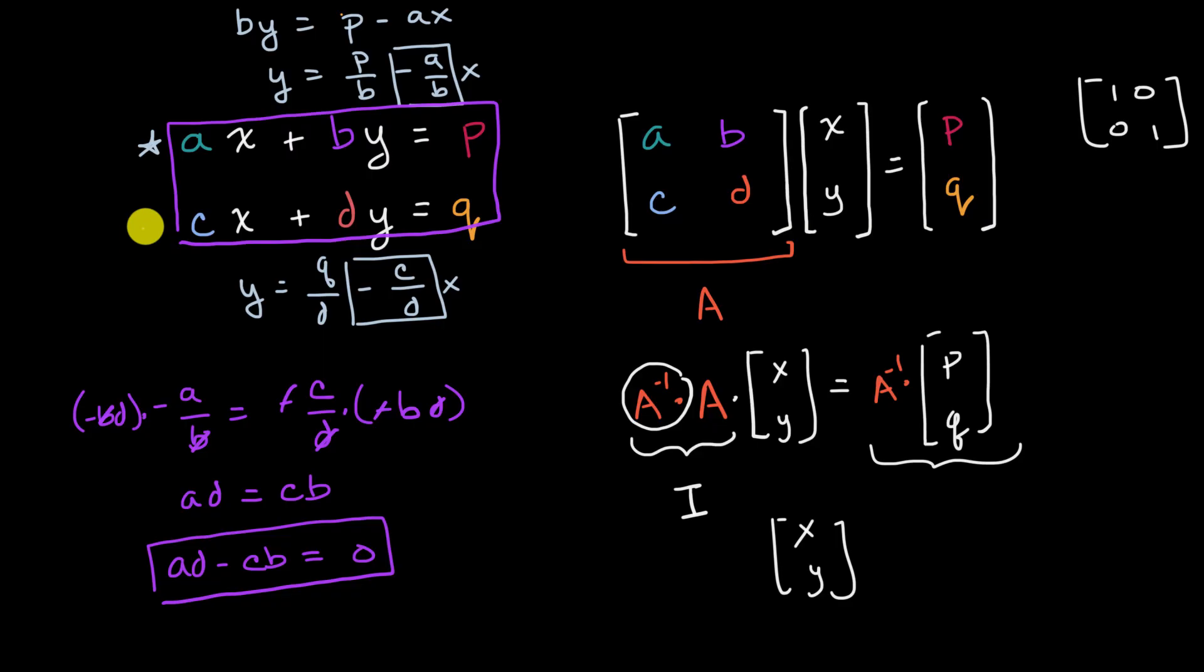Now, things bells might be ringing in your head right now, because a, d, so that's a times d, minus c times b, minus c times b, that's the determinant of this matrix A here. So this is going to be true only in a situation, if and only if the determinant of our matrix A is equal to zero.